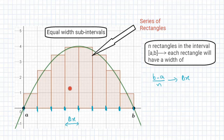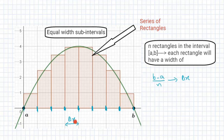The question that arises is how many rectangles do we need. Let's say I consider n rectangles in the interval a to b — then each rectangle will have a width of (b minus a) divided by n, the number of rectangles. That gives me the width of each rectangle, which is given by delta x.